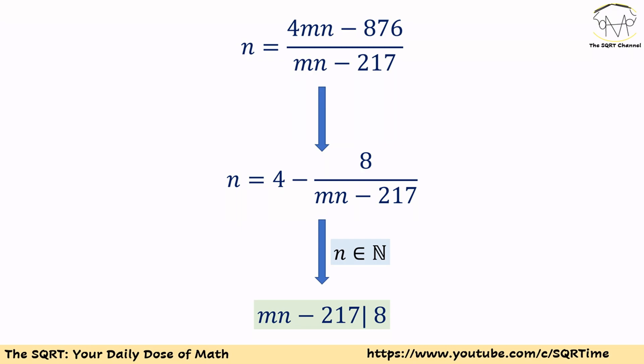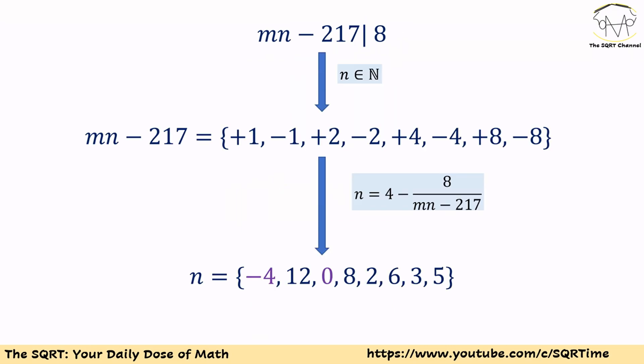Now remember to be able to have this as a natural number, we need to have mn - 217 to be a divisor of 8. To have mn - 217 be a divisor of 8, we can say that mn - 217 is going to be one of these numbers: it can be ±1, ±2, ±4, and ±8.